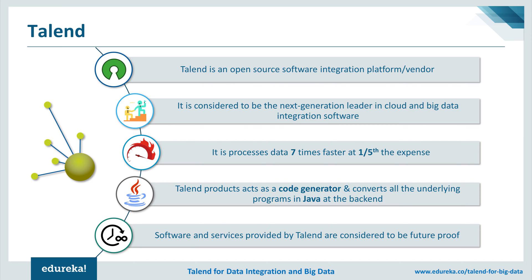The current version of Talend can process data up to seven times faster and at one fifth of the original cost compared to previous versions. On top of this, Talend tools act as a code generator — when you create a job or a business model at its GUI, at the backend Talend automatically converts all the underlying programs into Java.